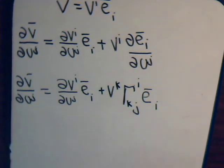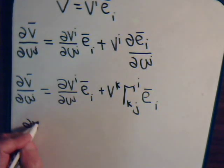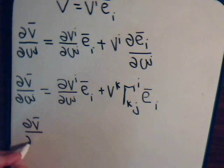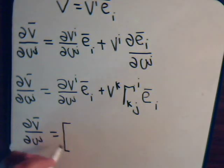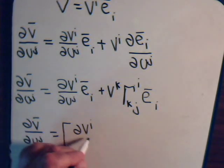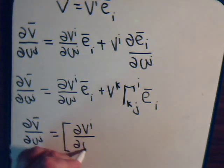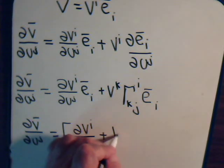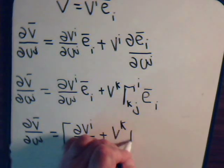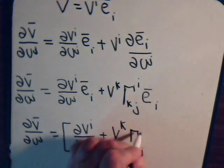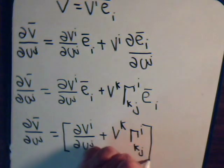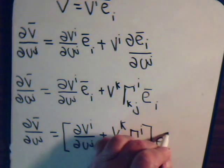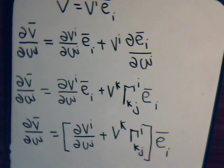Now we can factor out these tangential vectors e_i, and we have this resulting expression. The question again is: is this right-hand side a tensor?